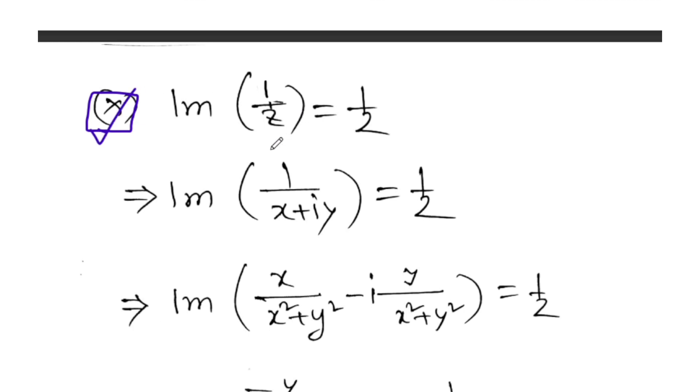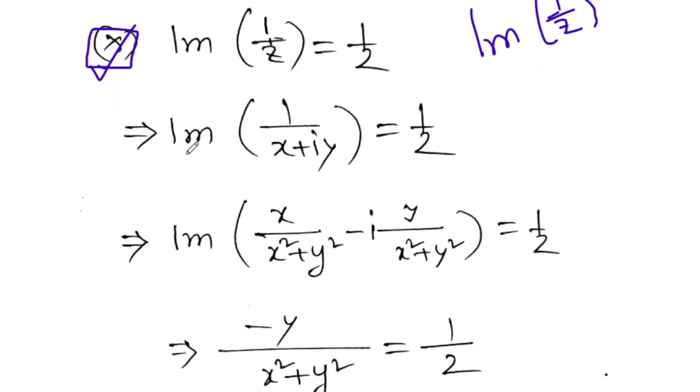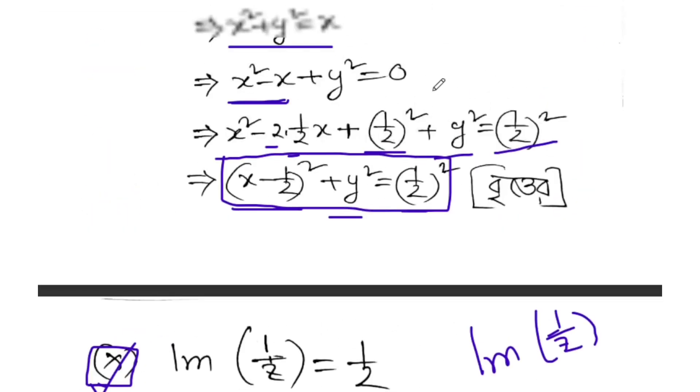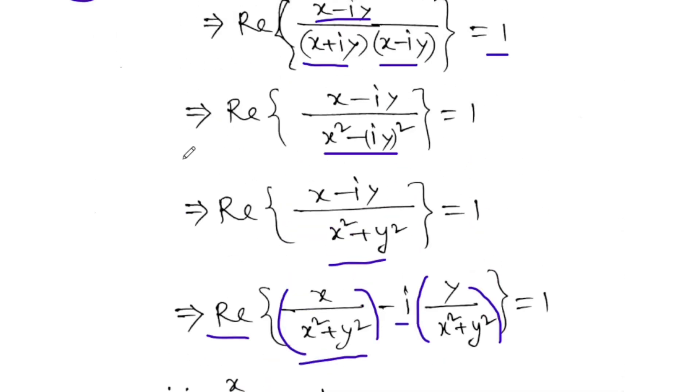Now from the IX number problem, the imaginary part is one-half. So the imaginary part of one by Z equals one-half. Let me determine this by the same method I used before.